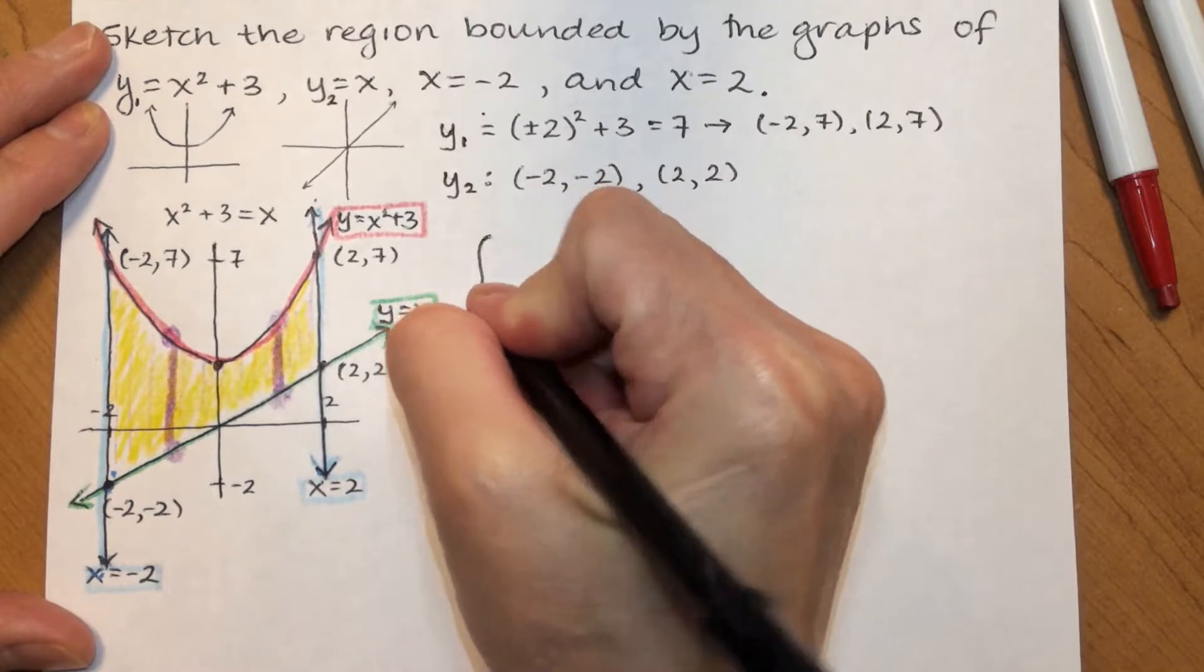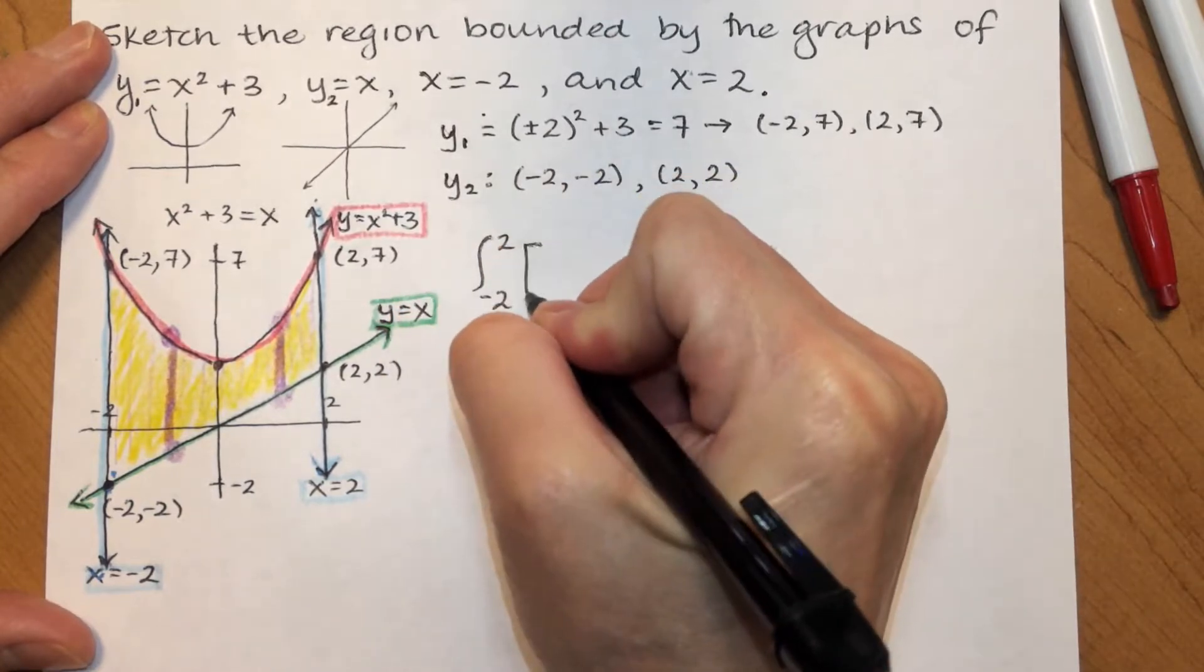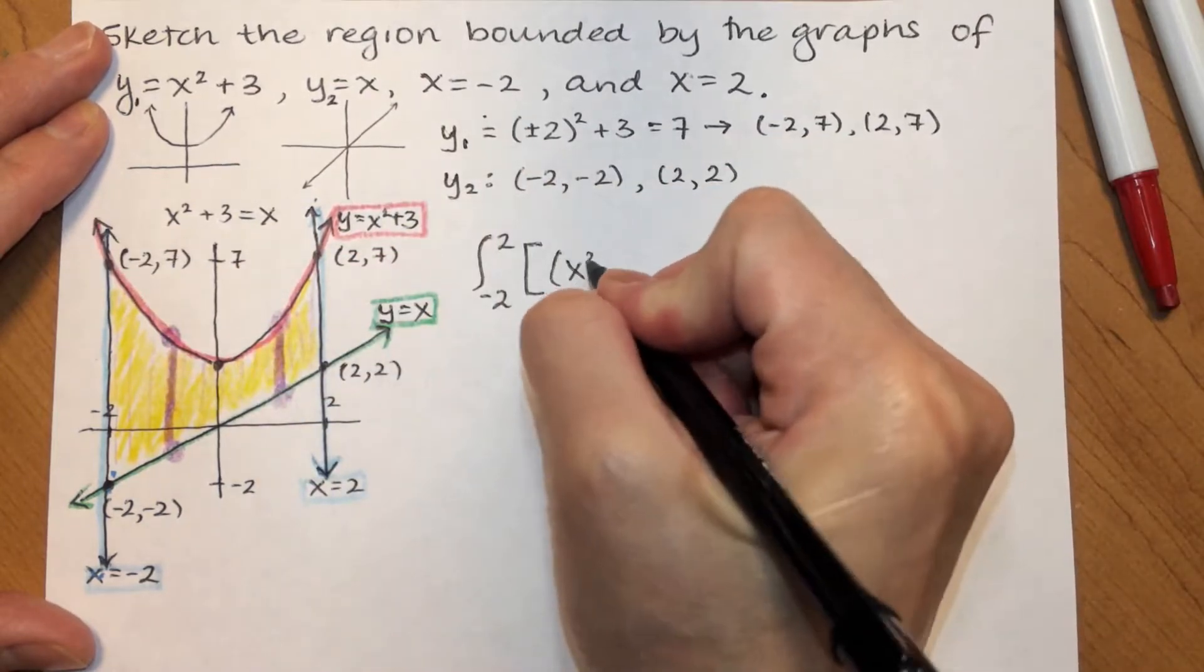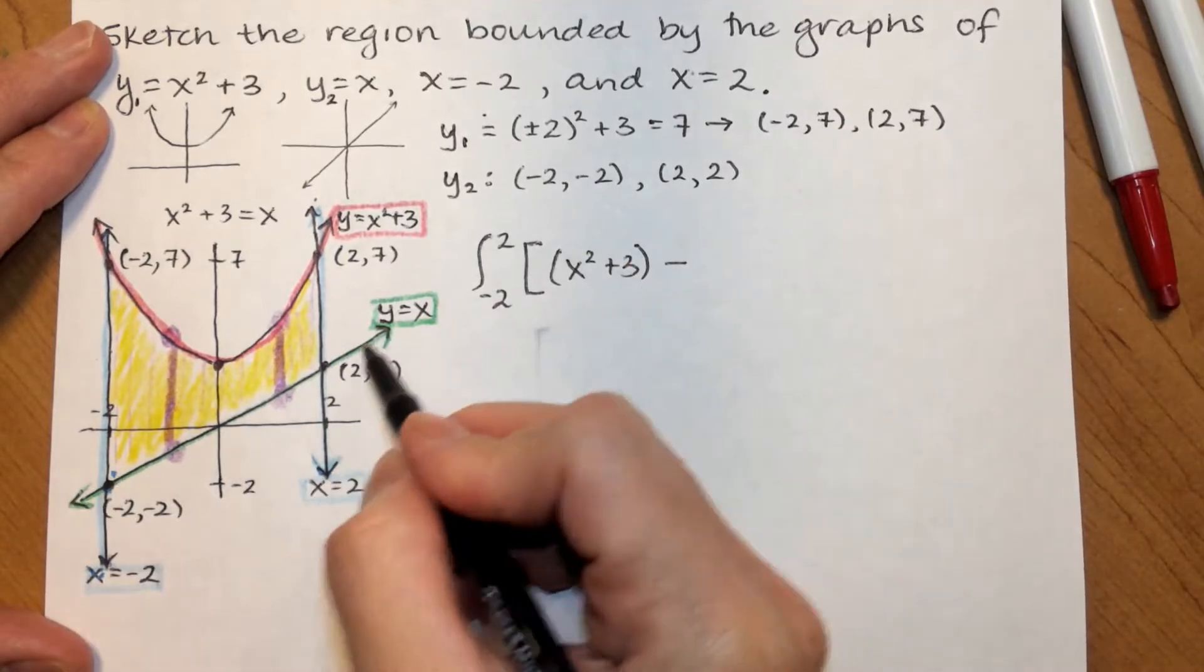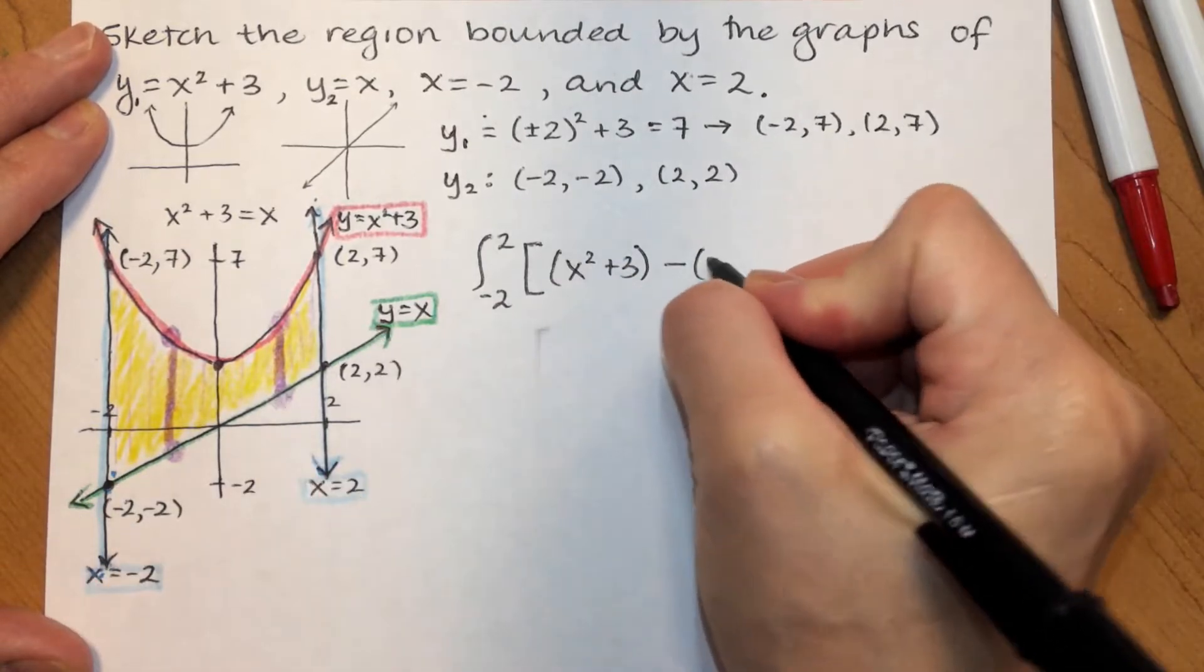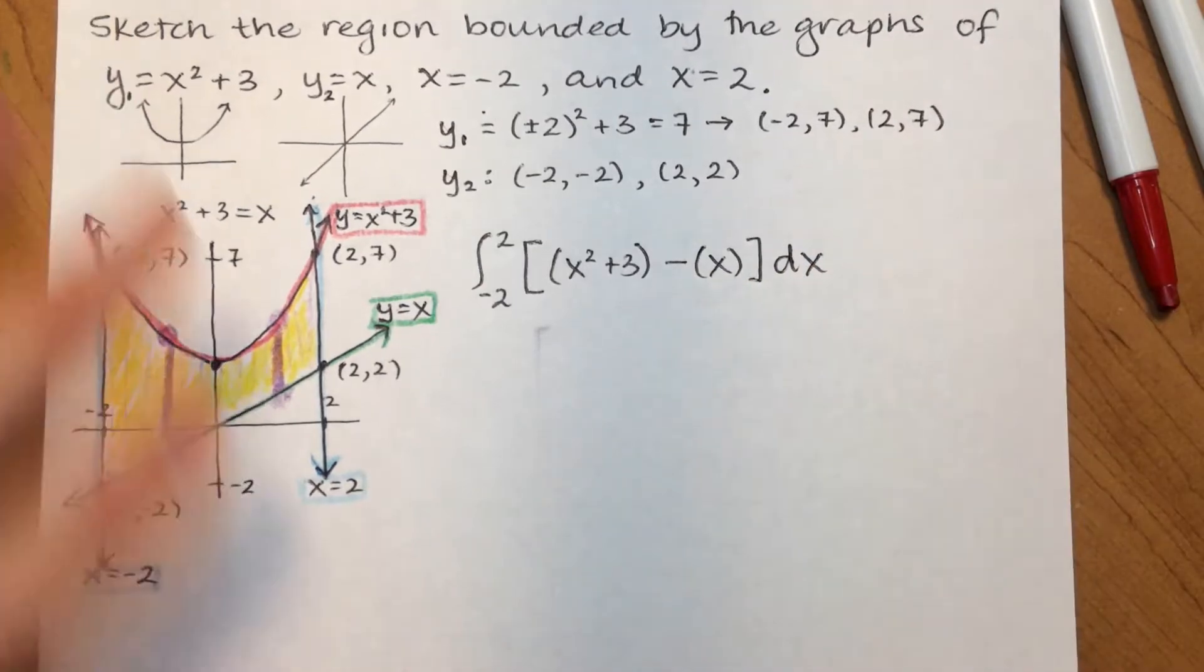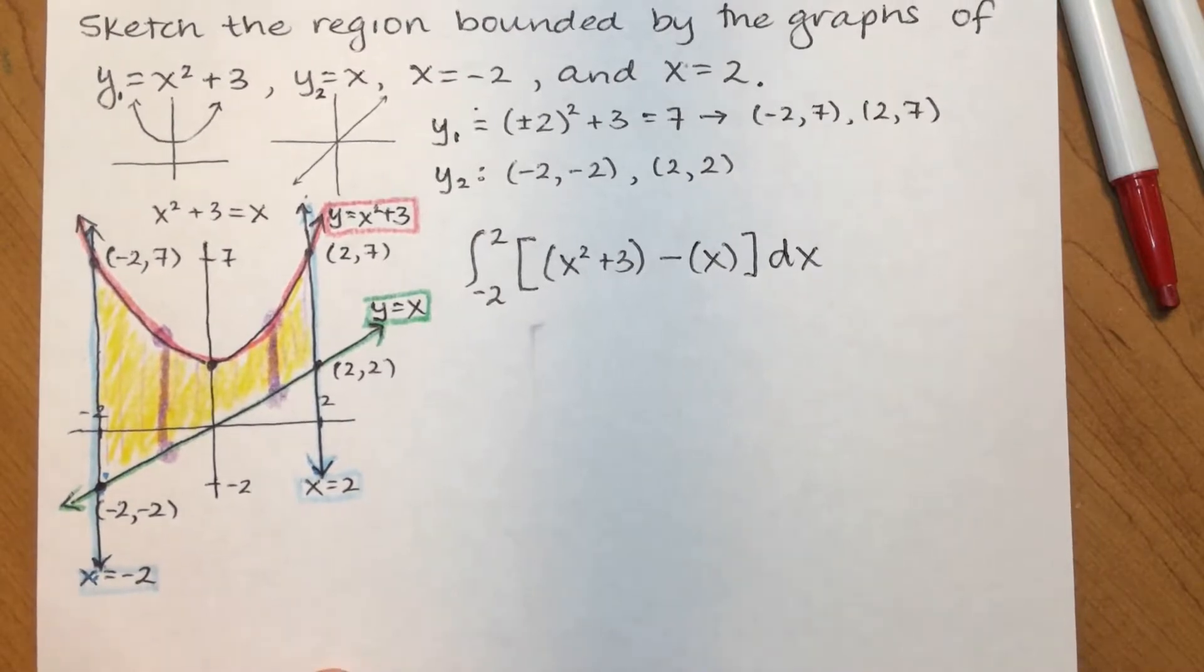So, my integral is going to go from negative 2 to 2. And, it's the curve on top, the parabola, so x squared plus 3, minus the curve on the bottom, which is the line, x. And, that's the hardest part, getting the graph drawn and setting up the integral. Alright, now the easy part is just integrating.